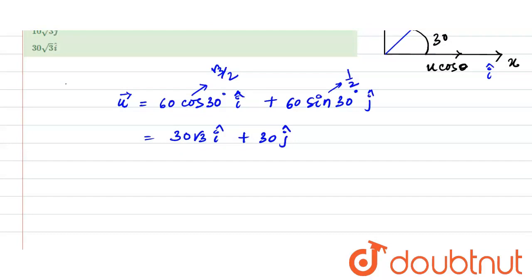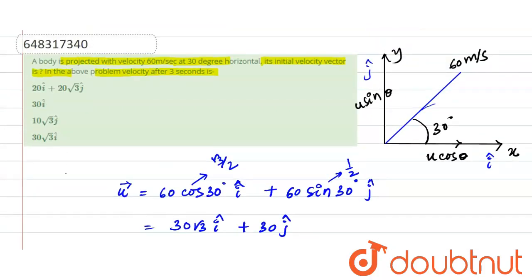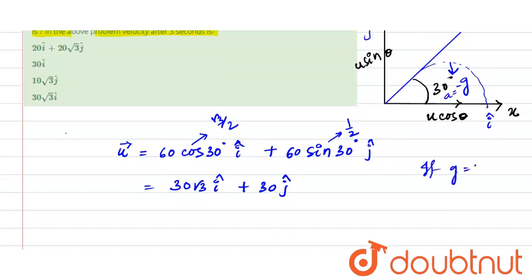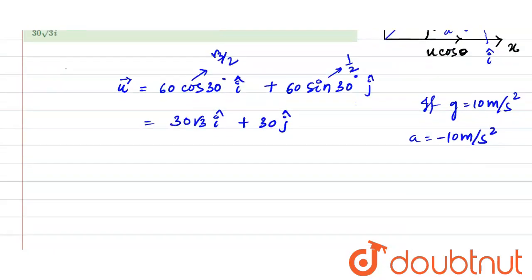When the body undergoes projectile motion, the only acceleration is due to gravity, acting vertically downward. So the acceleration vector a = −gĵ. Taking g = 10 m/s², a = −10 m/s². We apply the equation v = u + at, where a = −gĵ.